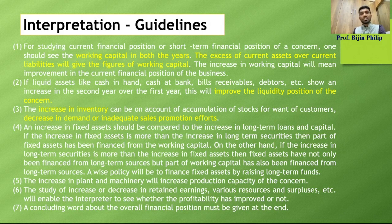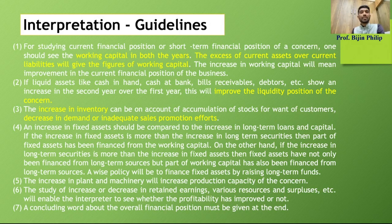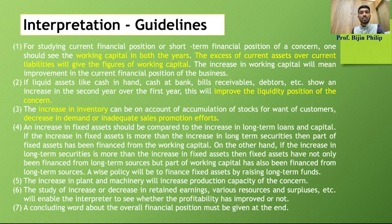Another important concept to understand: a company should finance fixed assets through long-term funds. If the company is purchasing fixed assets, it should be financed through either equity shareholders' funds or other long-term funds. Many companies have a tendency to use short-term funds for purchasing fixed assets, which is not a good sign for the company's solvency position. So make sure that if there is any increase in fixed assets, there is simultaneously an increase in shareholders' funds or long-term funds — the fixed assets should be sourced through shareholders' funds or other long-term funds.